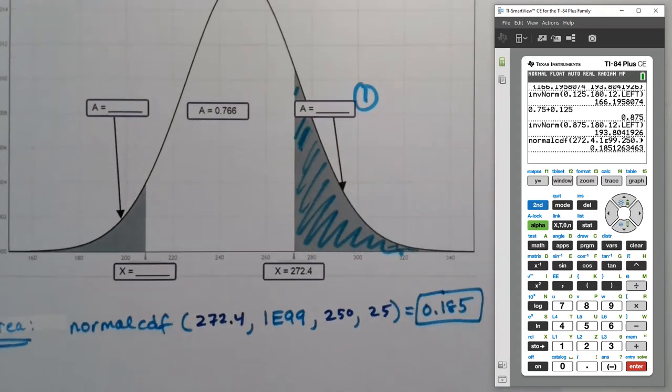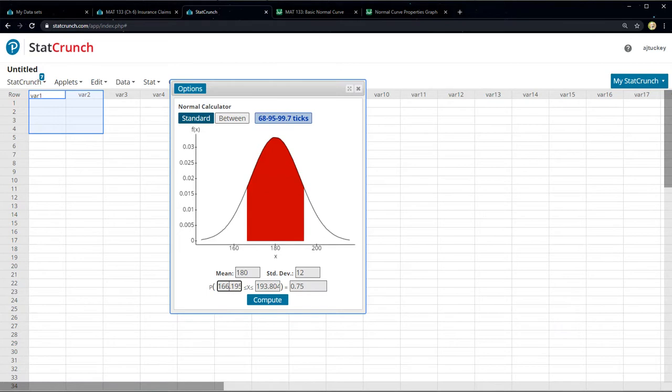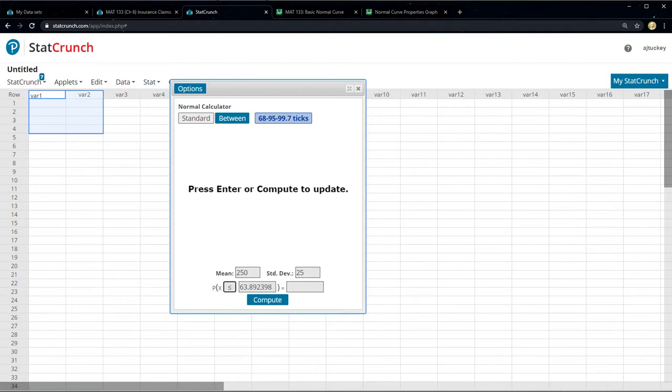Now, StatCrunch is easier, because StatCrunch, you can actually make it look like it's going to look on the page. So I want to click Standard, because I don't want a between. I want 250 here and 25 here.